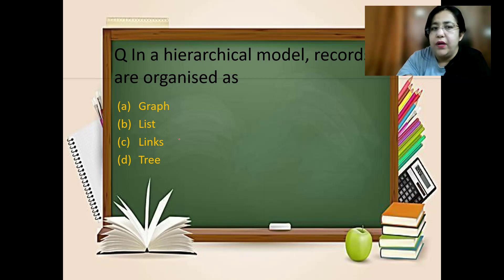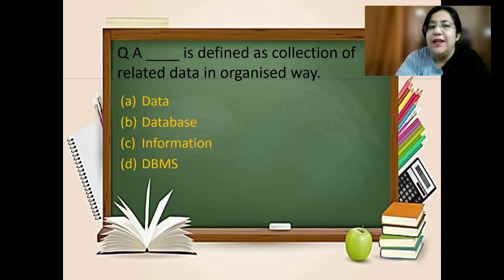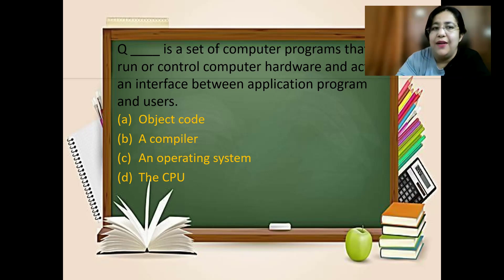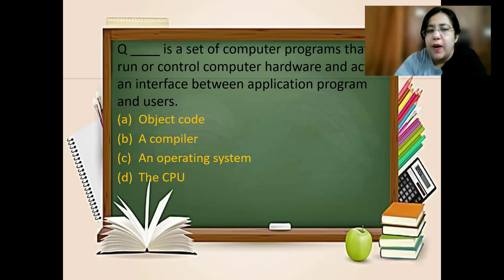Next question: in a hierarchical model, records are organized as a tree shape. Hierarchy means organization in the form of a tree. A database is defined as a collection of related data in an organized way. An operating system is a set of computer programs that run or control computer hardware and act as an interface between application programs and the user. The answer is option number C, operating system.